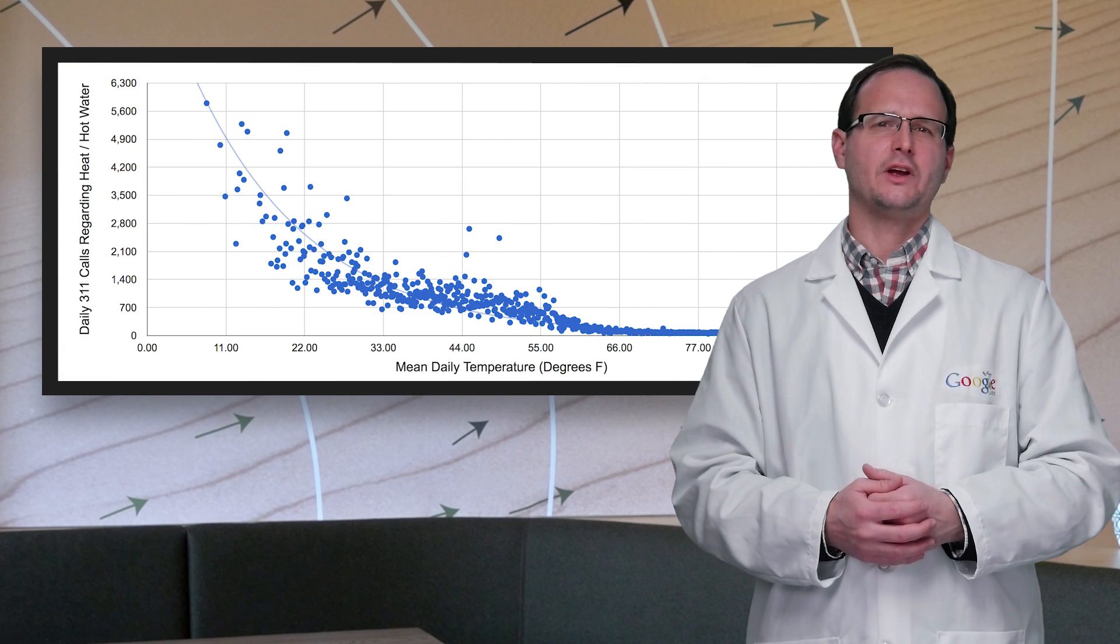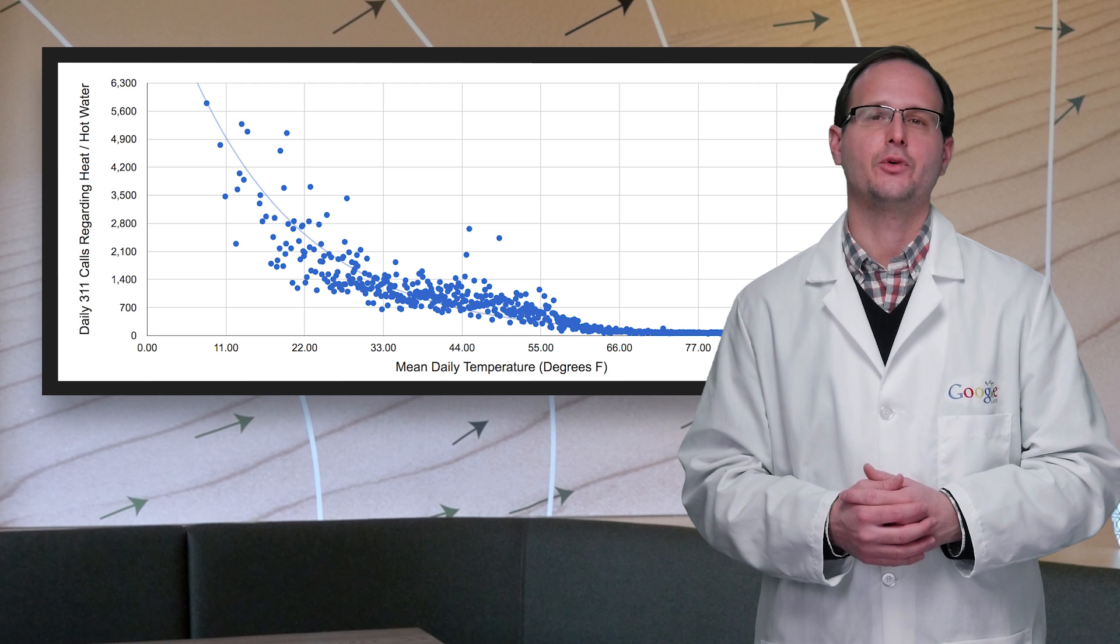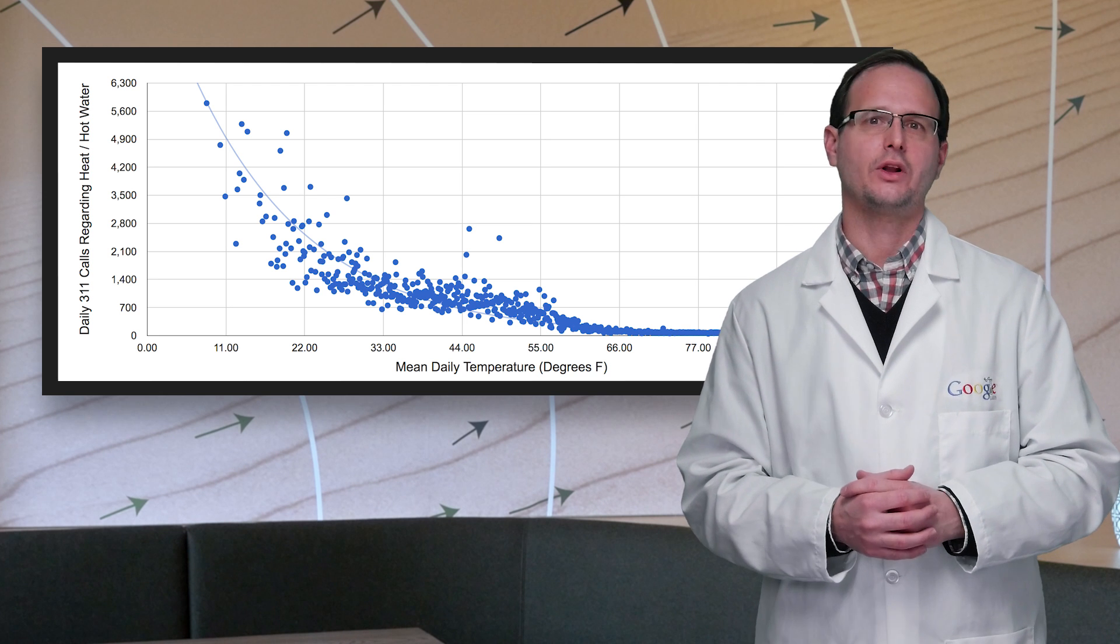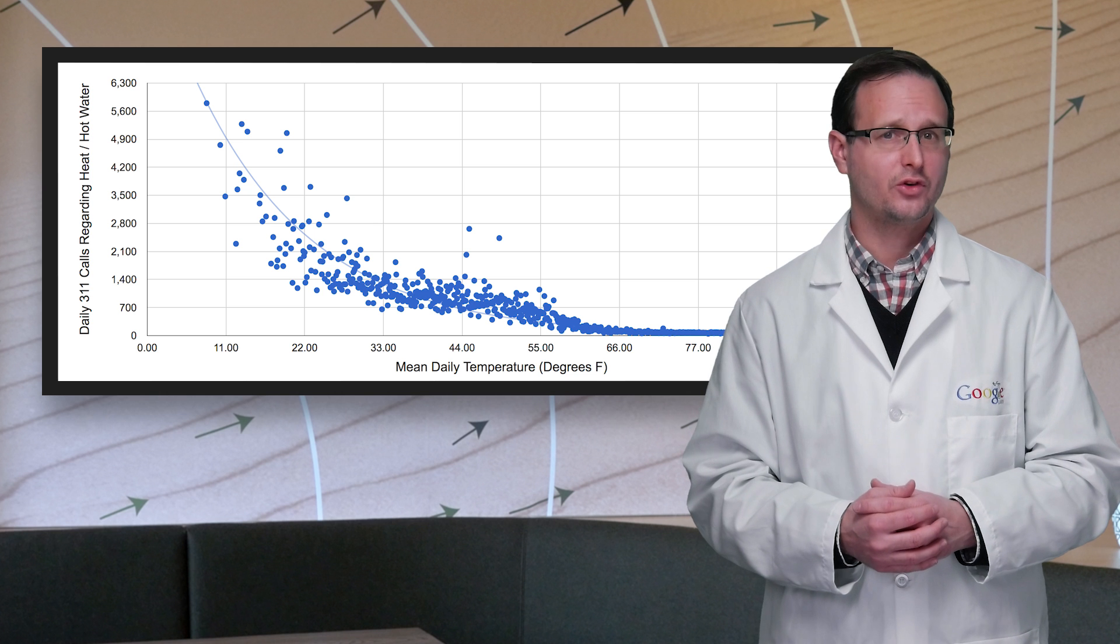Now, it's no surprise that the core volume for heating complaints is significantly higher when the temperature is lower. What is surprising was a similar correlation between missing manhole covers and snow depth.